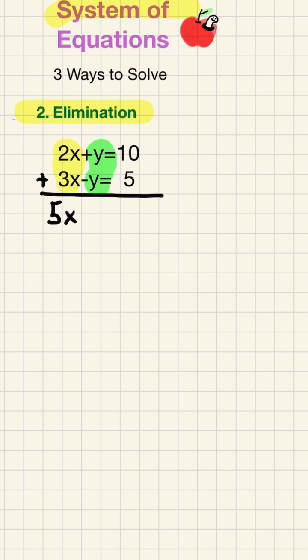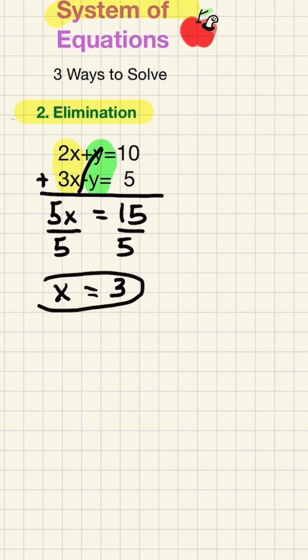Then we're going to combine 2x plus 3x. They're both positive, it makes 5x. On the right side of the equation, we have 10 plus 5. Both positive makes 15. We divide both sides by 5 to solve for x. 15 divided by 5, and now we know x equals 3.